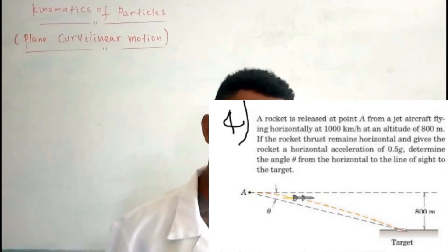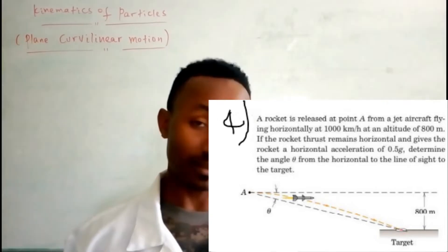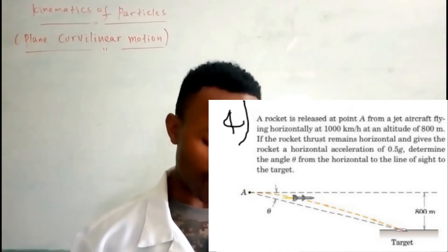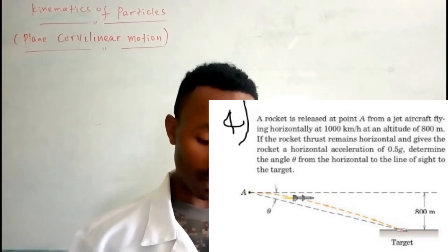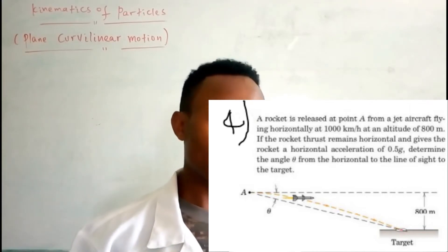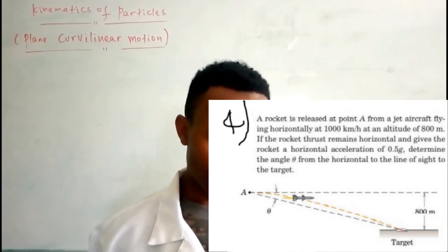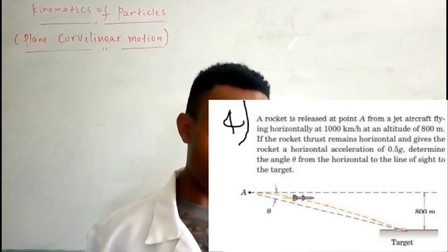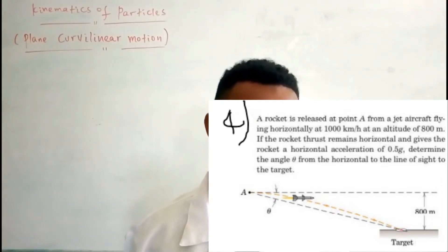At the altitude of 800 meters, if the rocket thrust remains horizontal and gives the rocket an acceleration of 0.5 g (gravity), the rocket will indicate — the rocket targets horizontally and gives a horizontal acceleration of 0.5 g. Determine the angle theta from the horizontal to the line of sight to the target.